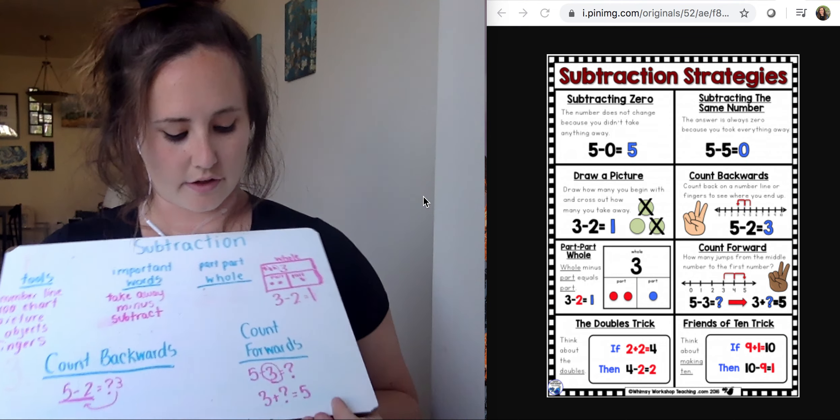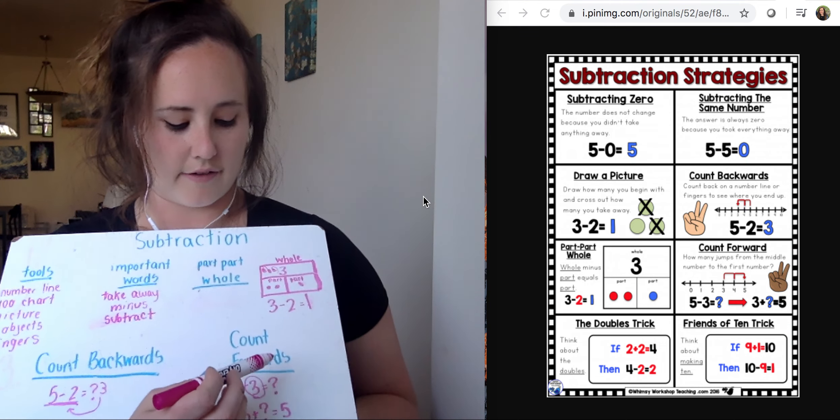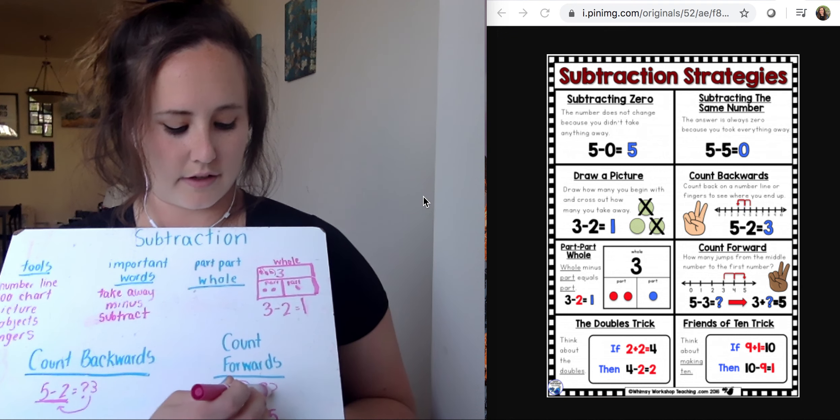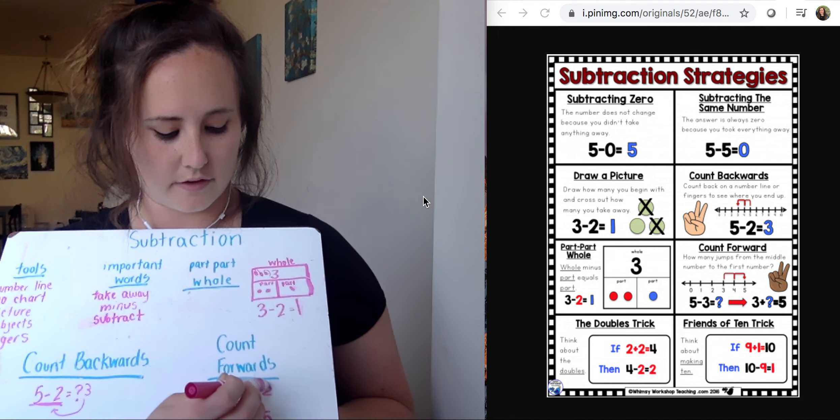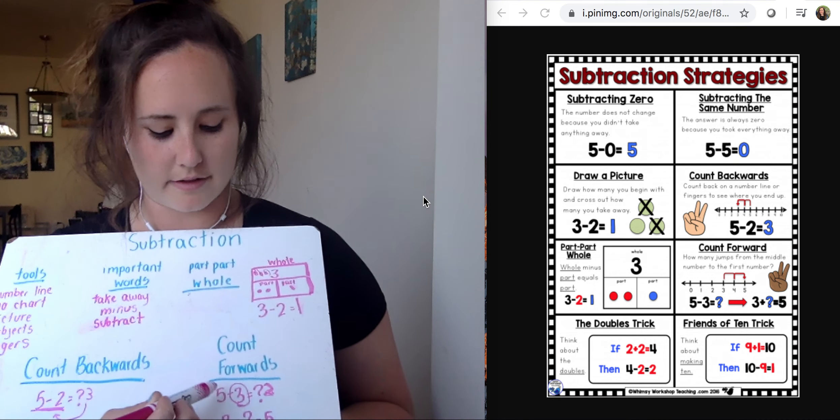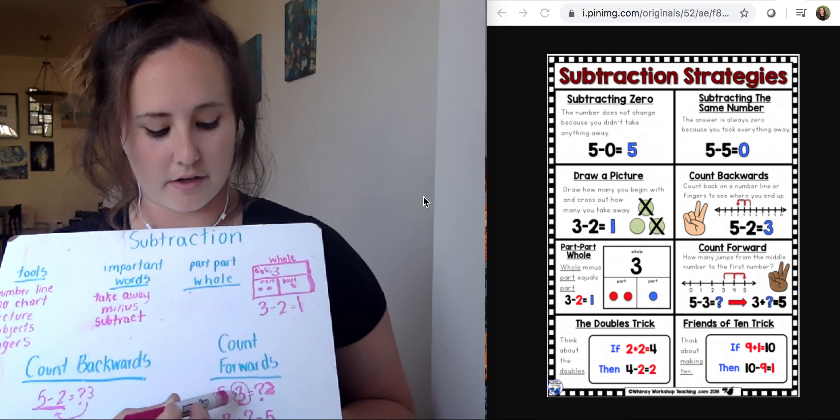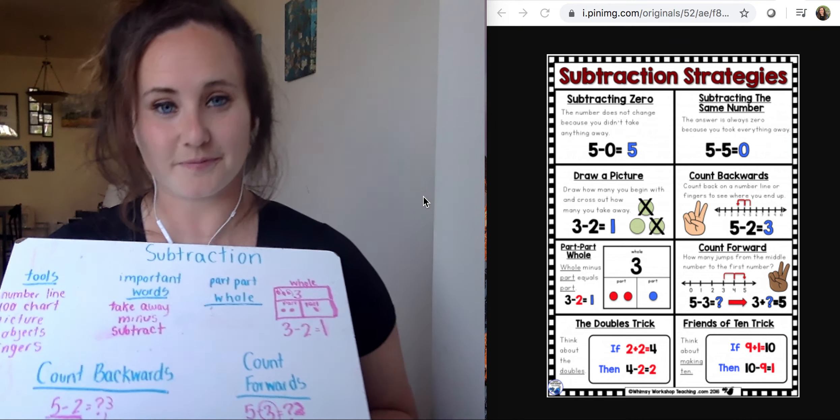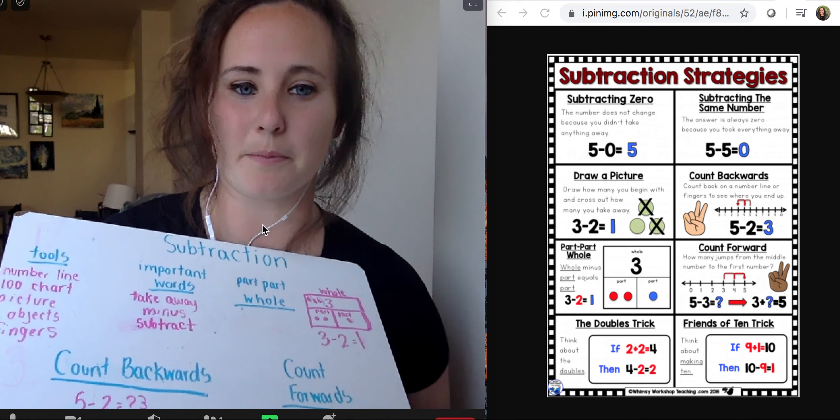So I know to get from three to five, I must add two. So then I switch up my number sentence. And I know 5 minus 3 is 2. All right. Thanks guys. Hope this has helped.